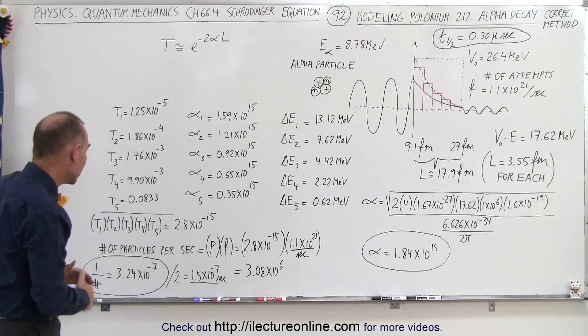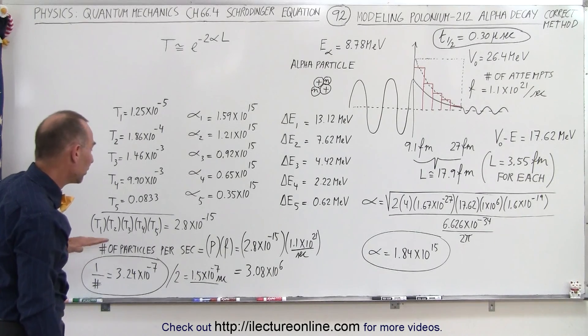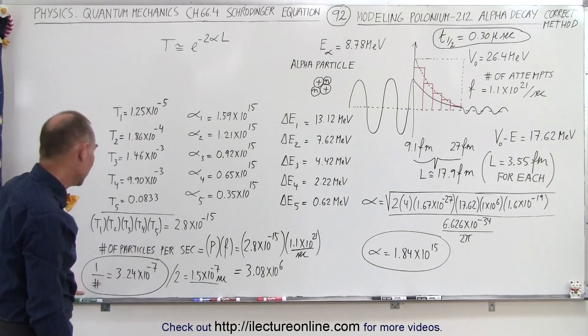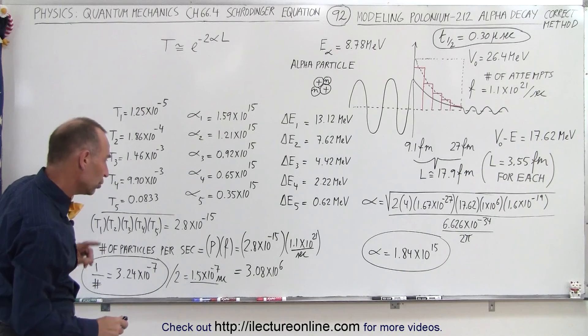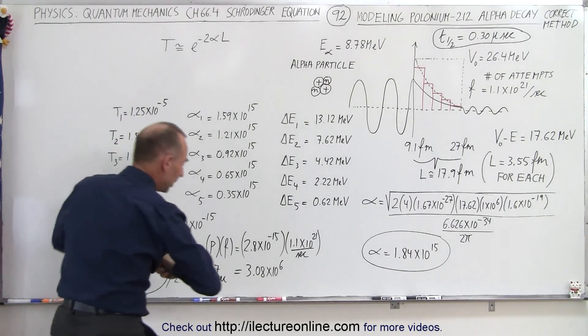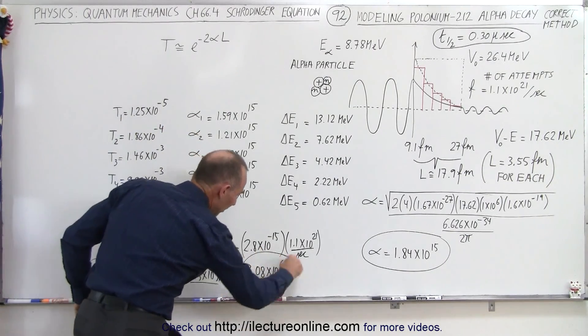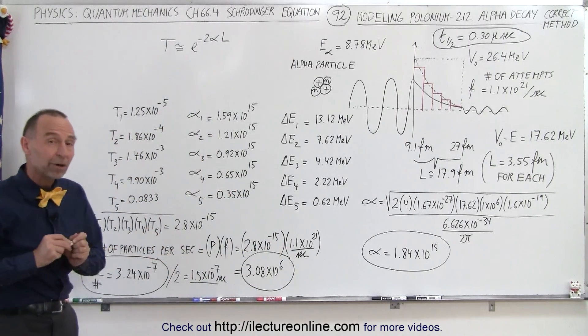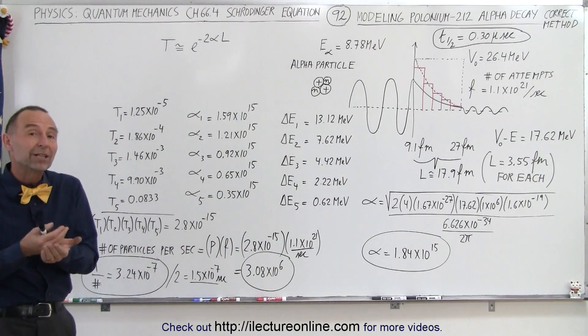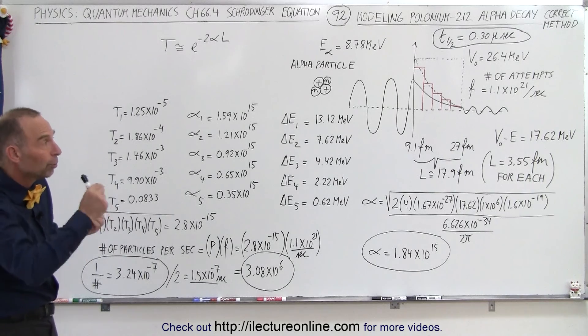And what we're seeing here is that the number of particles per second that succeed is going to be equal to, and where did I write that down, okay right here, about three times 10 to the sixth particles per second. About three million alpha particles per second will break through at the rate of attempts versus the probability of making it through.